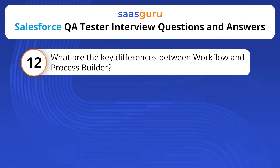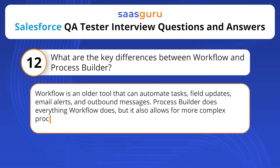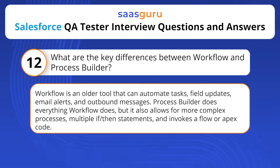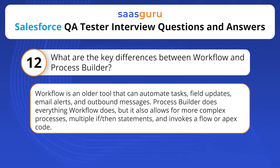What are the key differences between Workflow and Process Builder? Workflow is an older tool that can automate tasks, field updates, email alerts, and outbound messages. Process Builder does everything Workflow does, but it also allows for more complex processes, multiple if/then statements, and invokes a flow or Apex code.